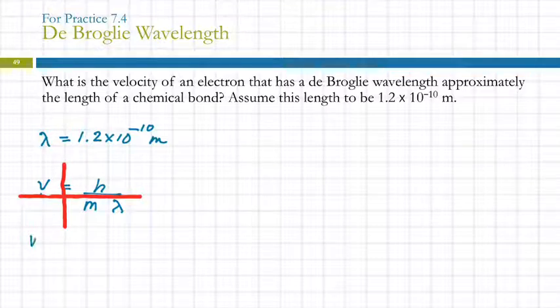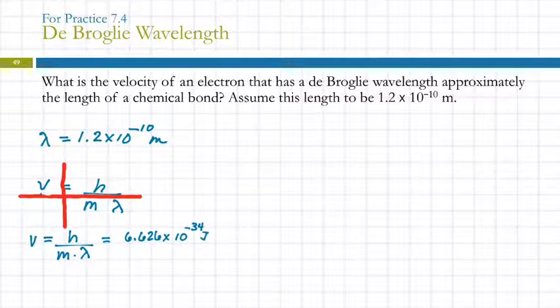So we get the velocity is equal to Planck's constant divided by the mass times the wavelength. So we need Planck's constant, 6.626 times 10 to the minus 34 joule seconds.